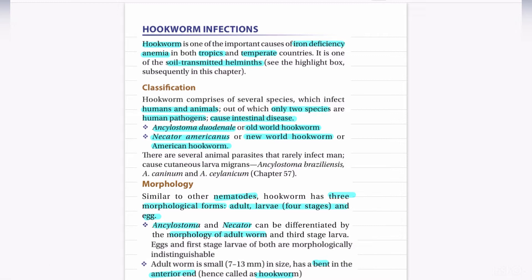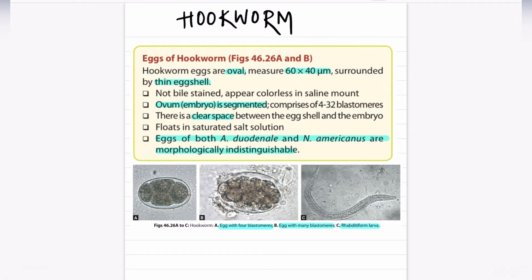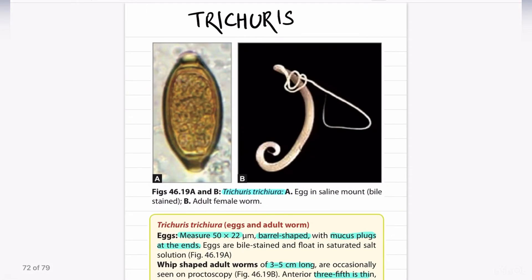Next, we are going to discuss about the eggs of hookworm. There are mainly two types of hookworm: Ancylostoma duodenale, the Old World hookworm, and Necator americanus, the New World hookworm. The eggs of hookworm are oval, measuring 62 by 40 micrometers, surrounded by a thin egg shell. These are non-bile-stained. There is a segmented ovum inside comprising 4 to 32 blastomeres, and there is a clear space between the egg shell and the embryo. The eggs of both Ancylostoma duodenale and Necator americanus are morphologically indistinguishable.